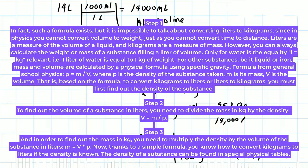For other substances, be it liquid or iron, mass and volume are calculated by a physical formula using specific gravity. Formula from General School Physics: p equals m slash v, where p is the density of the substance taken, m is its mass, v is the volume.